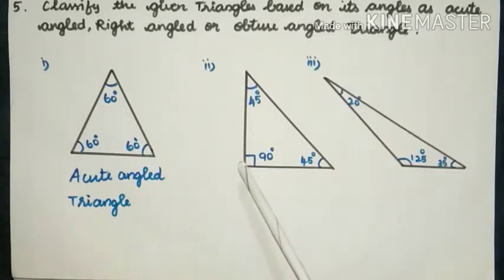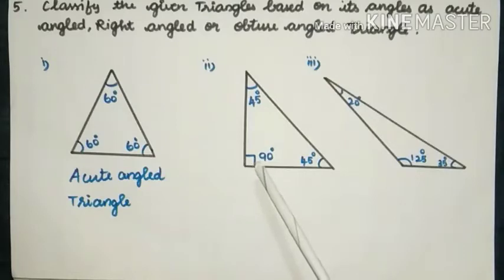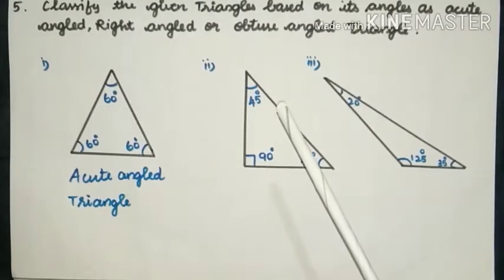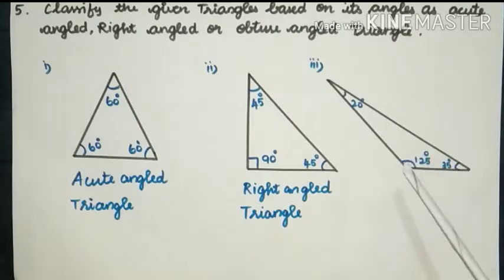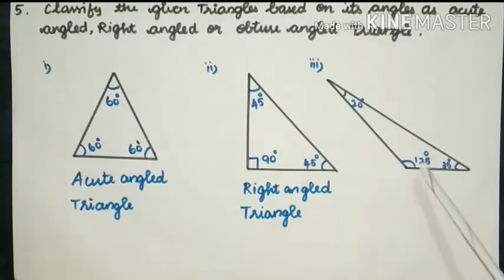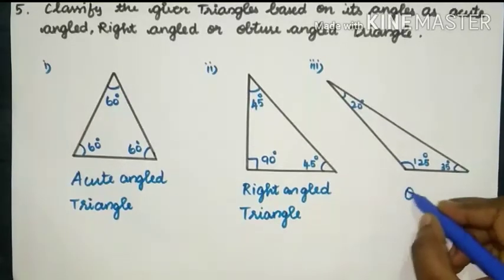Second one: one of the angles is 90° and the other two are 45° each. Since one among the three angles is 90°, it is called a Right Angled Triangle. Third one: angles are 20°, 35° and 125°. One of the angles is more than 90°, so it is an Obtuse Angle, lying between 90° and 180°, making it an Obtuse Angled Triangle.